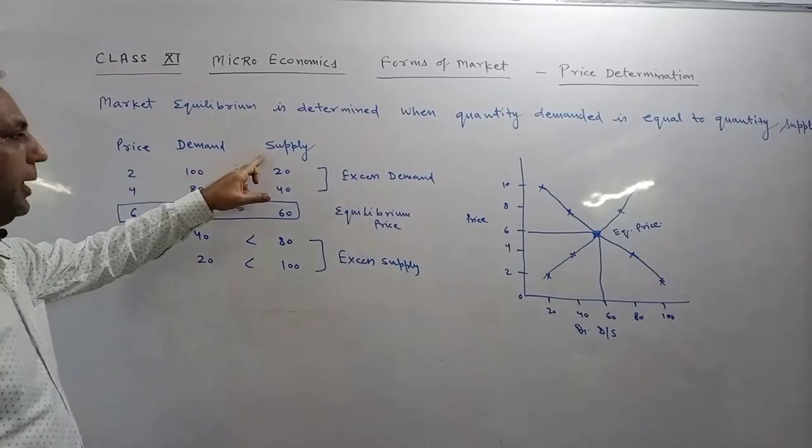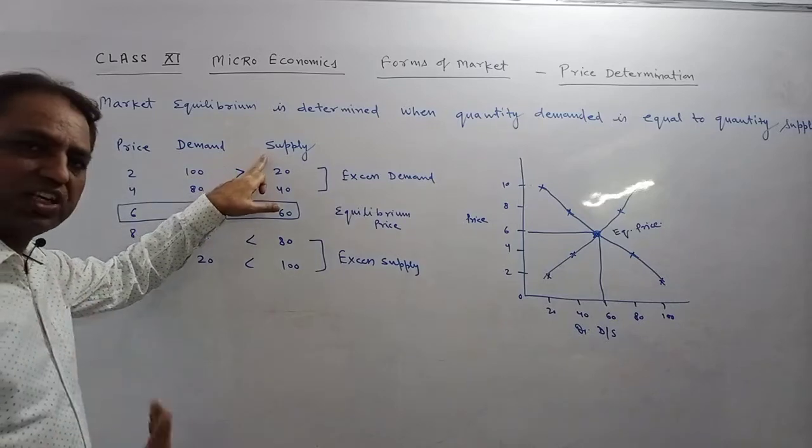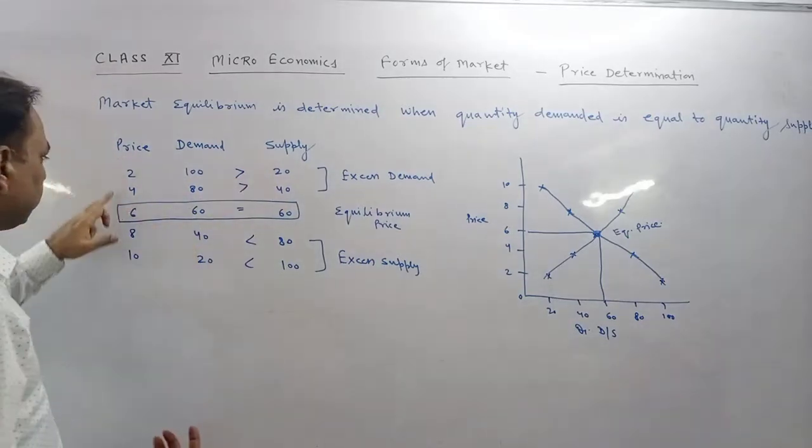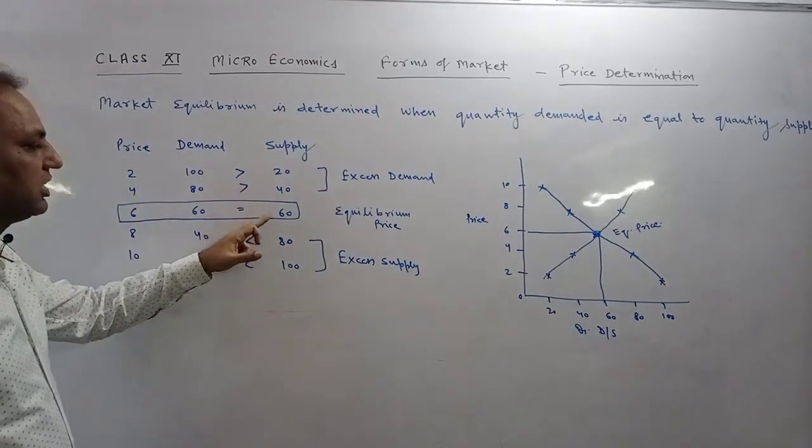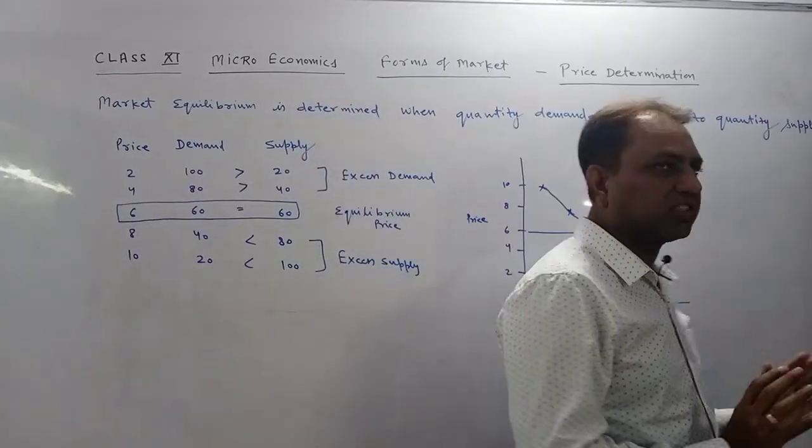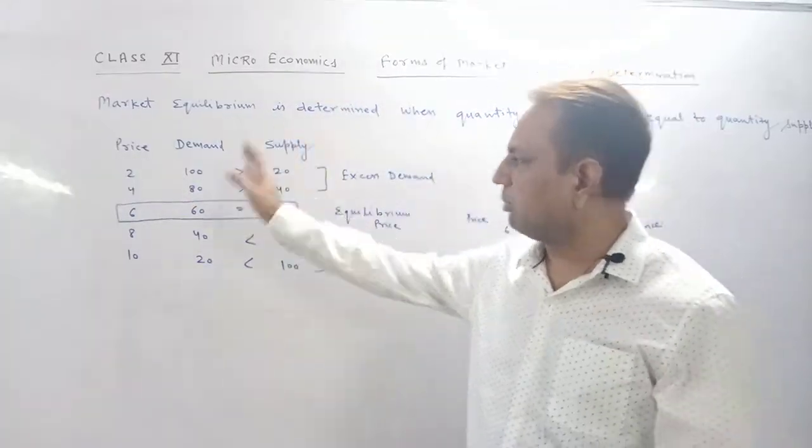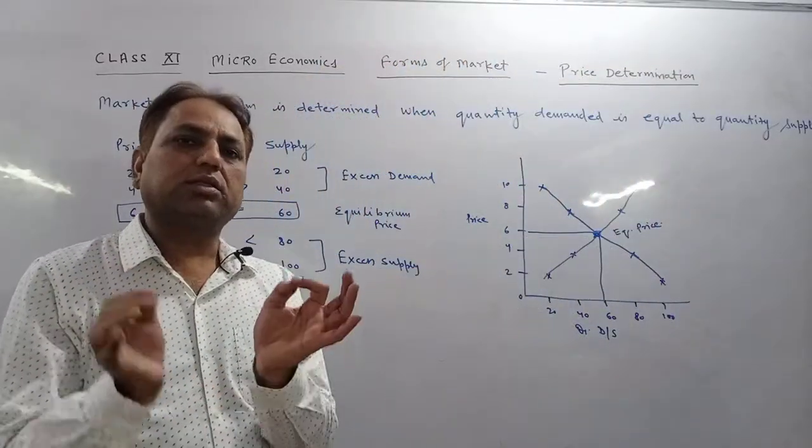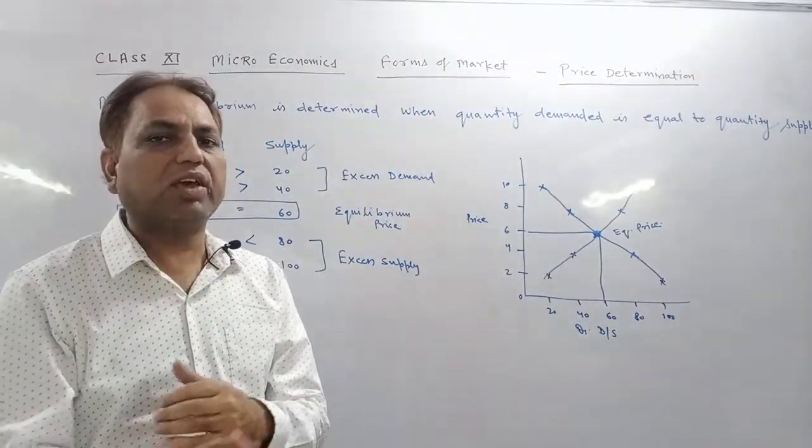Now, the supply. Supply has direct relationship with the price. If the price rises, supply also rises. Here, 2, 4, 6, 8: 20, 40, 60, 80, 100. The price is the equivalent price. We have seen both forces. Demand is lower, supply is increasing. But the situation is where the demand and the supply will be equal.